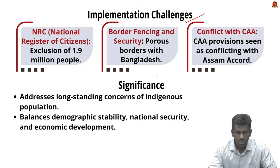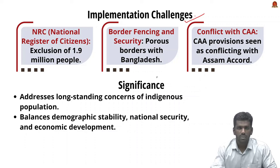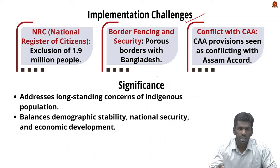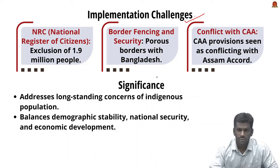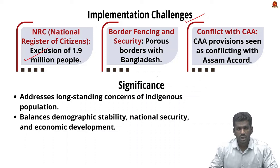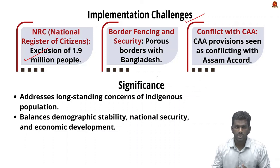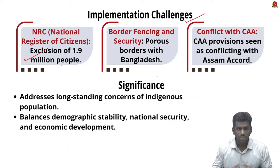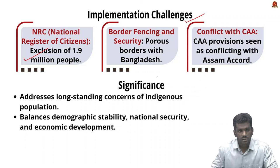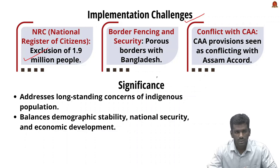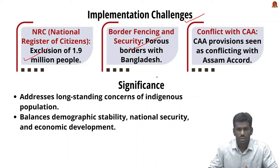While the Assam Accord was a landmark agreement, its implementation faced several challenges. There were political, social, and administrative hurdles that slowed down identification and deportation of illegal migrants. A major update of the National Register of Citizens (NRC) was carried out in Assam in 2019, which led to the exclusion of over 1.9 million people — a figure that remains controversial. Additionally, the border with Bangladesh remains porous in certain areas.